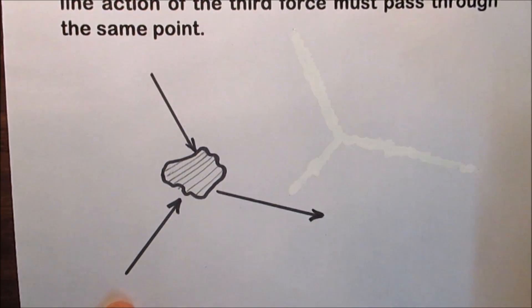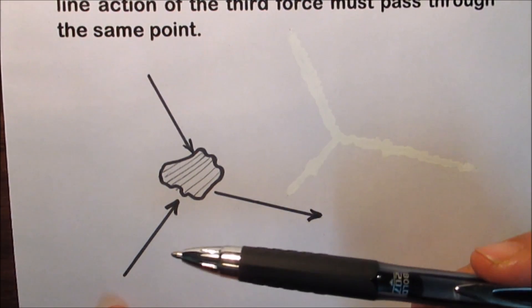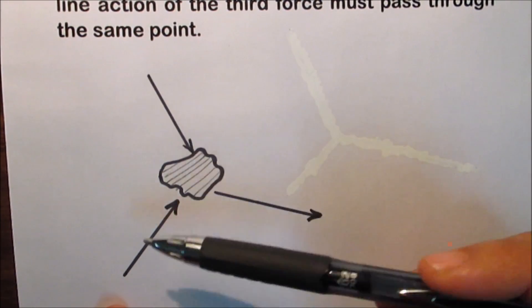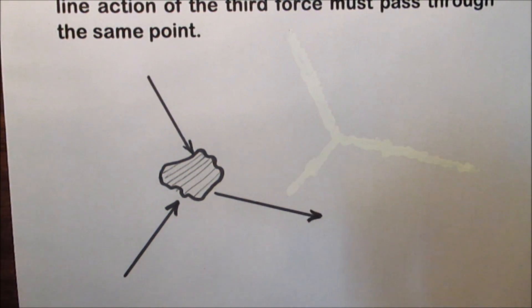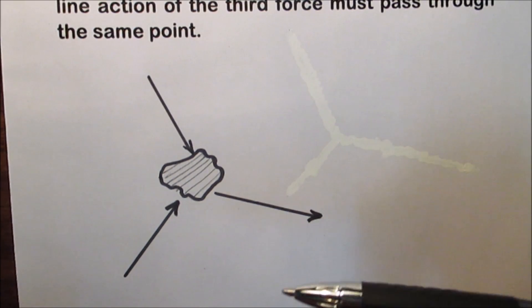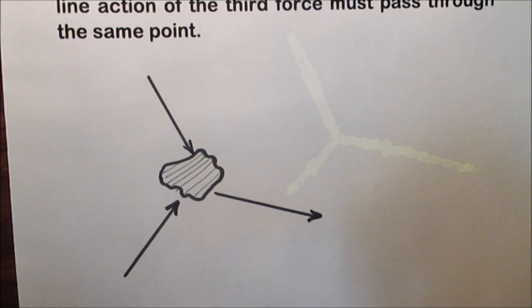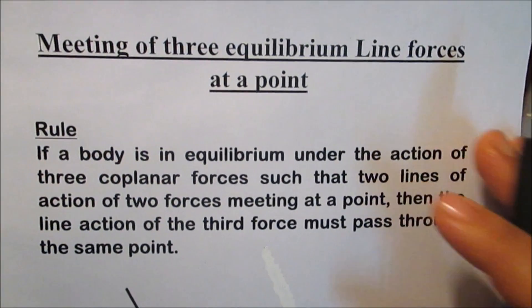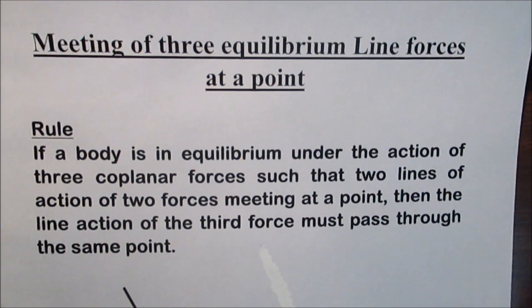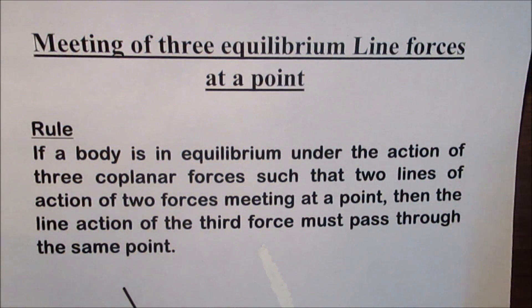In this lesson, we have three forces in equilibrium. Two of them meet at a point, then the third force has to pass through the same point. Generally, this lesson is an application of the triangle of forces rule and Lame's rule.